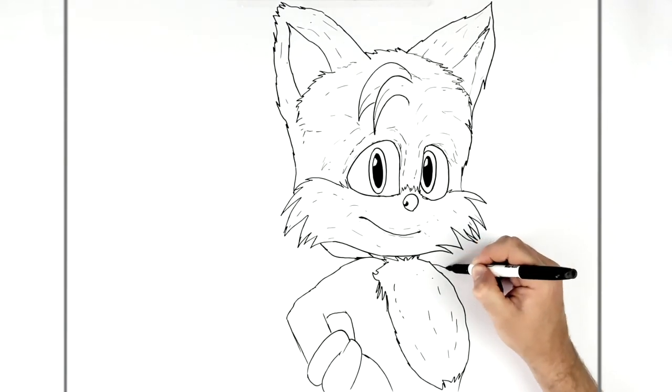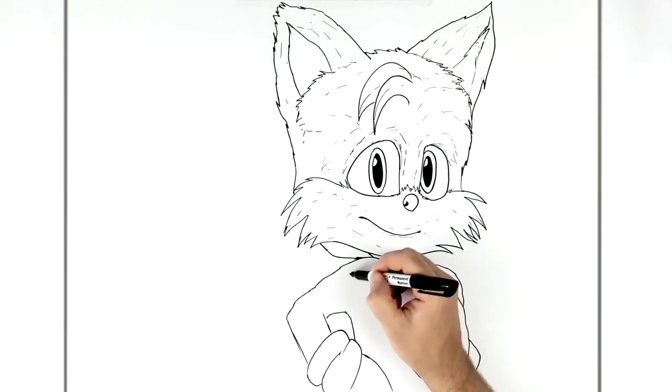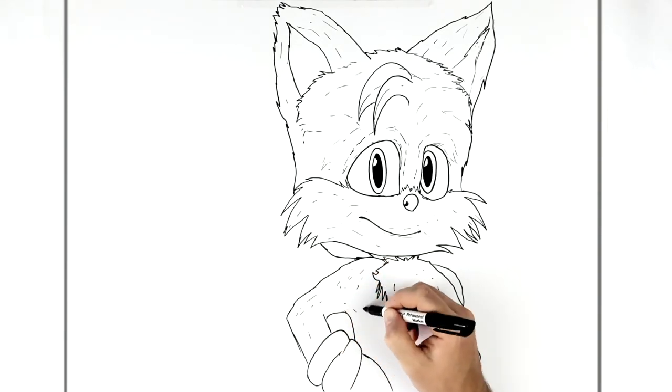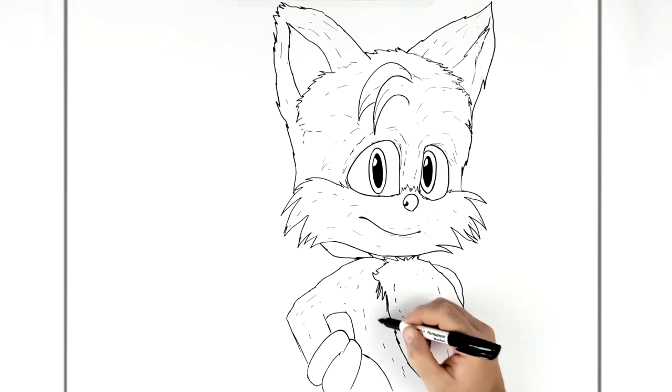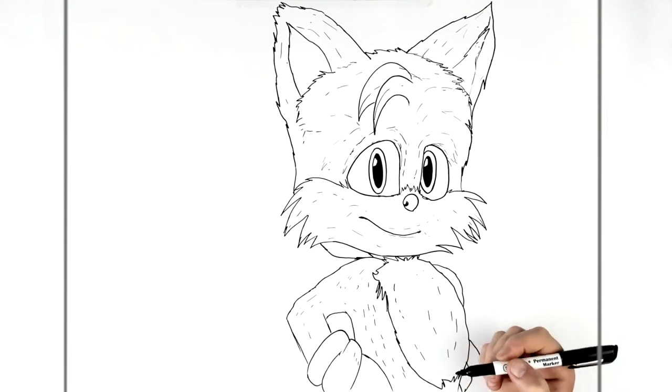Then his shoulder on the other side, hairy line there, and then his glove on this side. Feel like his top of his white glove there. Again, if you want, lots of this sort of texture on his fur, like that. It just makes it look more like the CGI Tails rather than the cartoony one.